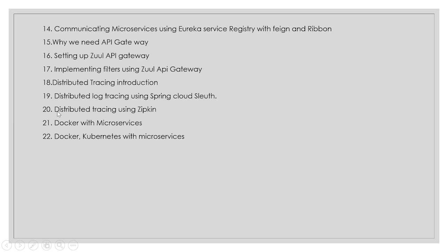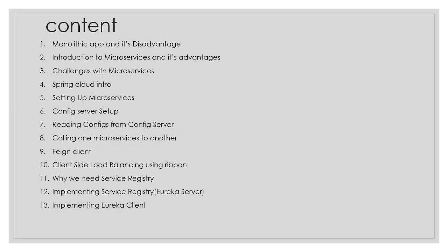Up to item 20 in the course content, we'll have covered most of the core topics. After that, I'll explain Docker with microservices and Docker with Kubernetes with microservices. The same microservices concepts we covered up to item 20 will be re-implemented with Docker, and then finally with Kubernetes.